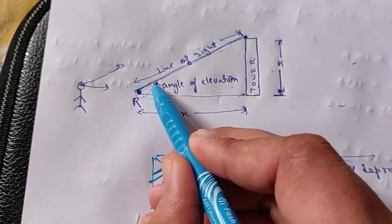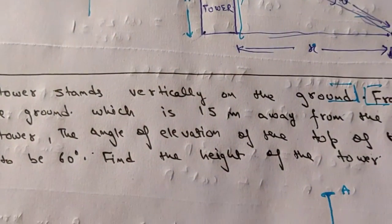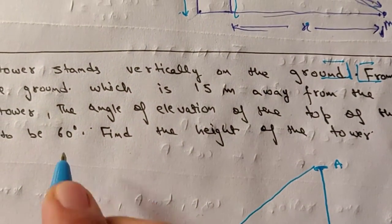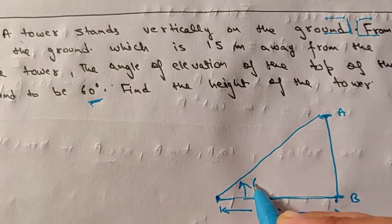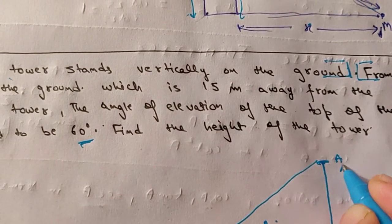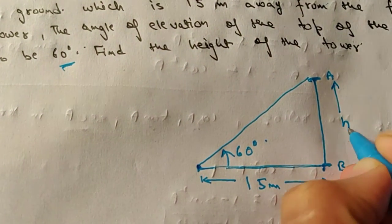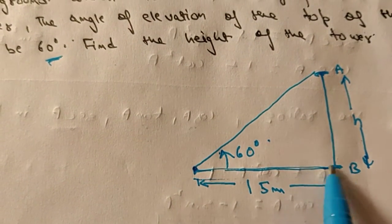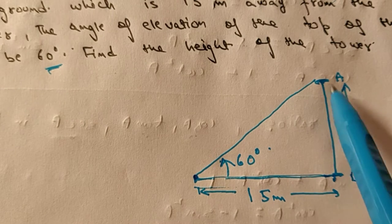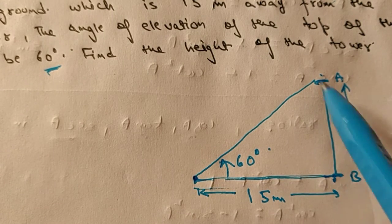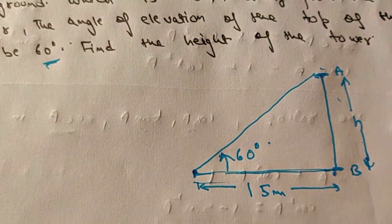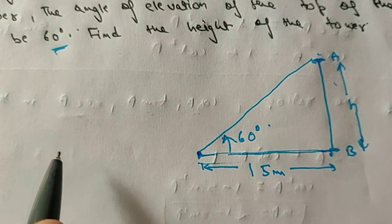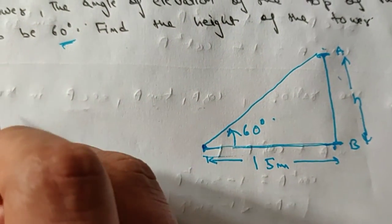The angle of elevation from the point to the top of the tower is 60°, and we need to find the height h. Just as I explained, we are given the angle of elevation and the horizontal distance — we have to calculate the height using trigonometry.